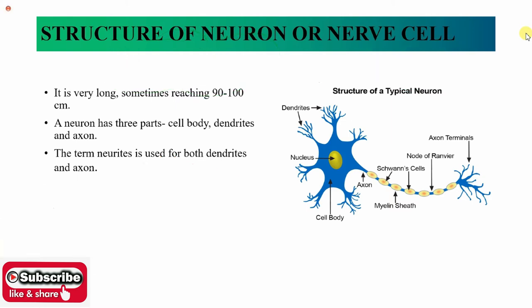If you want to understand the whole system, start with basic units and you will understand the whole system and function. Our basic unit is the neuronal cell. So we will understand the structure of neurons. It is a very long, very elongated structure — not a small size structure. It is so elongated that its head region, its soma body, can be in one place while the terminal is somewhere else.